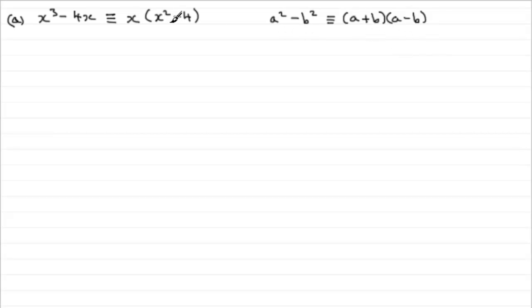And that's what you've got here. You've got x all squared minus two squared, the four. So this is going to factorize then to be identical to x bracket x minus two multiplied by x plus two. That's part a.